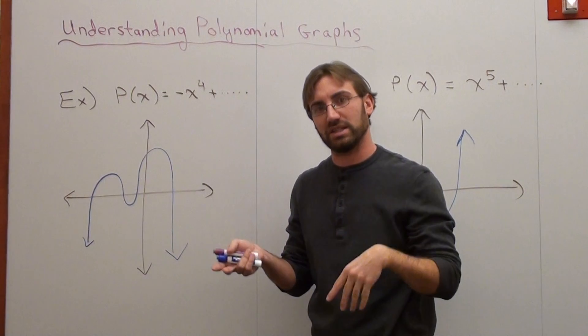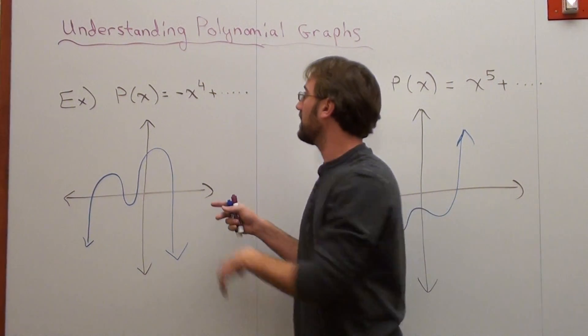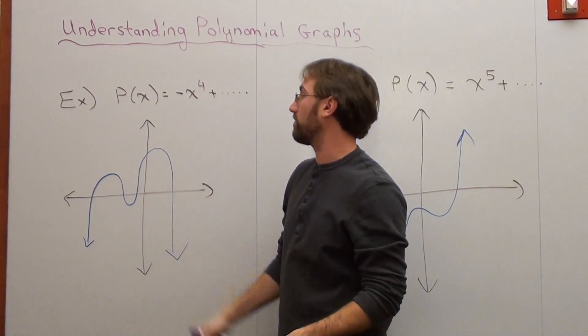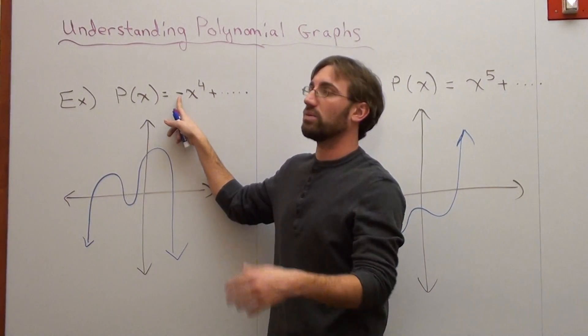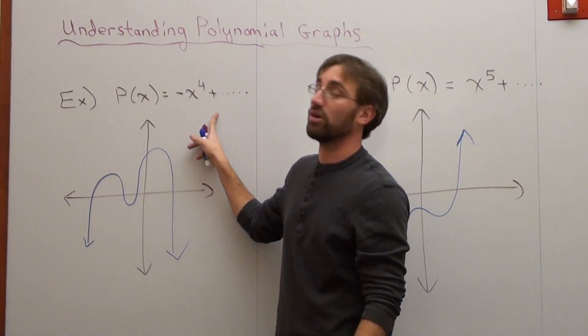Don't get negative and positive confused, and don't get even and odd confused. That's different. Even and odd, you look at the degree. Positive and negative, you look at the leading coefficient. So if it's negative, the right arrow will point down. If it's positive, the right arrow will point up.